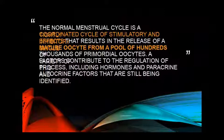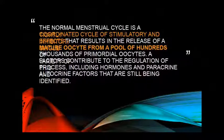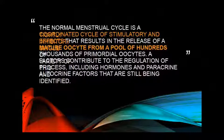The normal menstrual cycle is a coordinated cycle in which stimulatory changes come from the release of a mature oocyte. A mature oocyte is released from hundreds or thousands of primordial oocytes during the menstrual cycle. Coordinated cyclic changes occur in a stimulatory response, resulting in one mature oocyte being released from thousands of primordial oocytes.